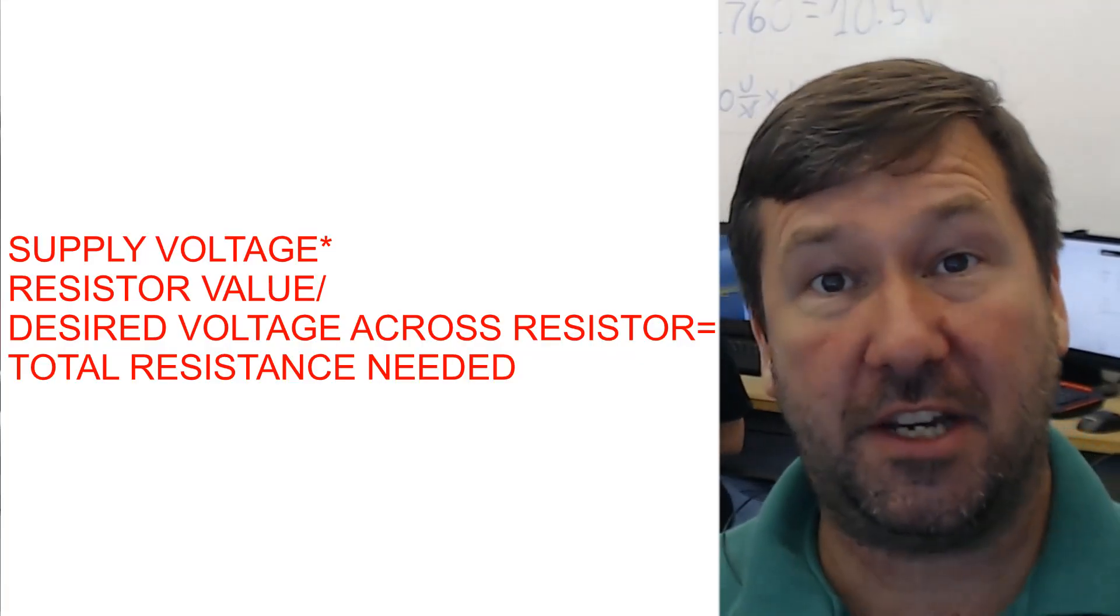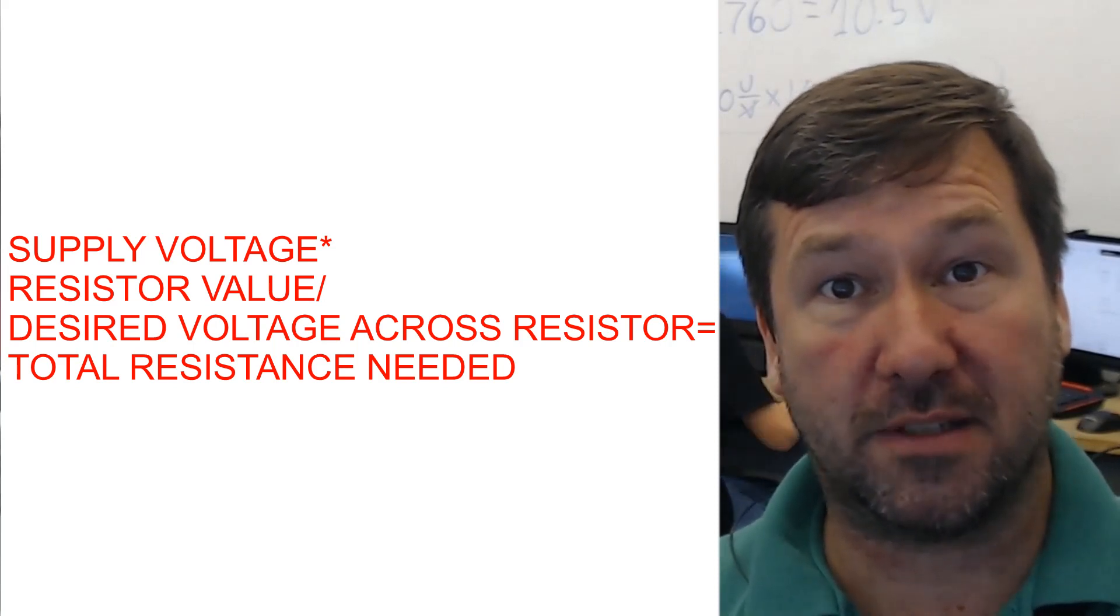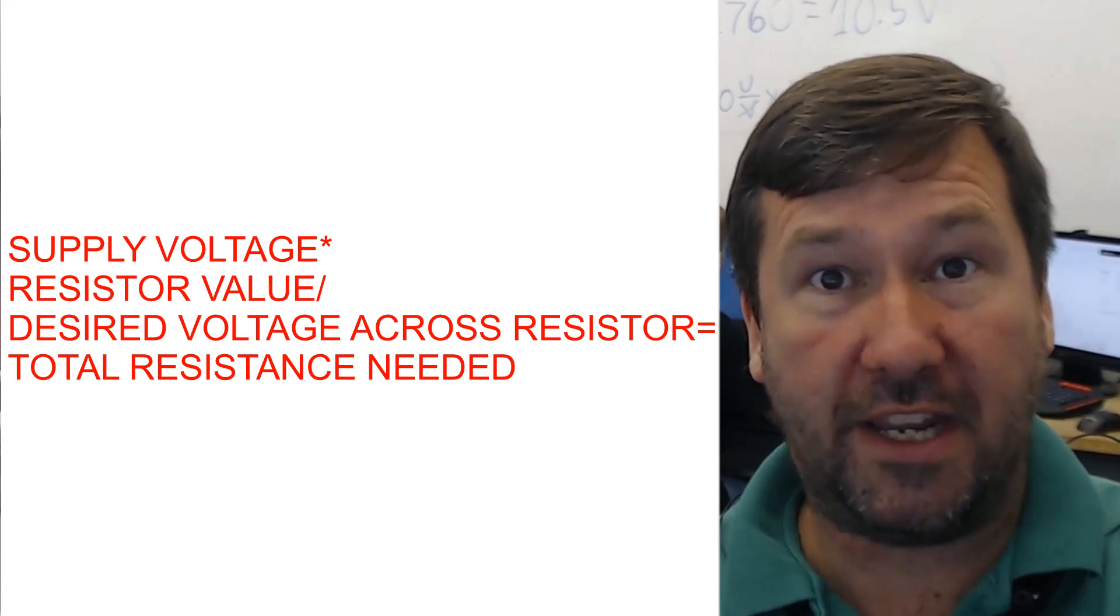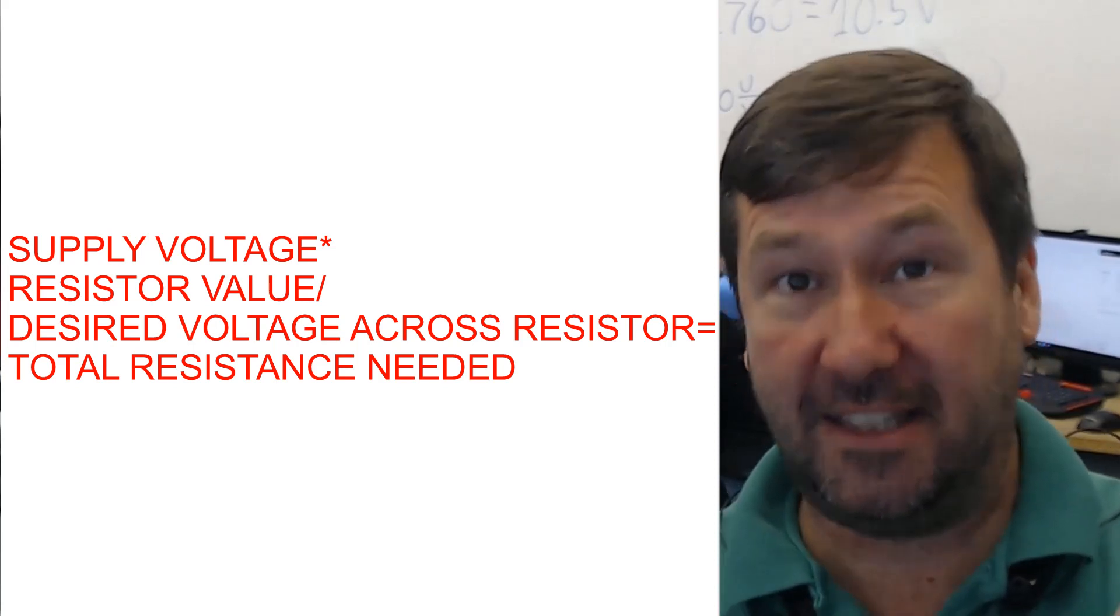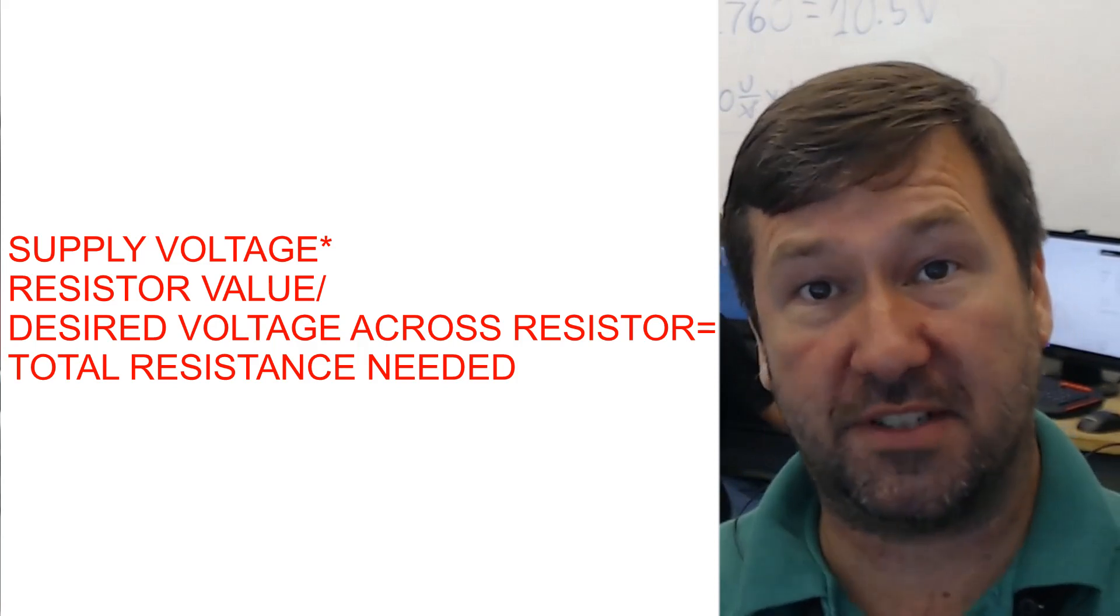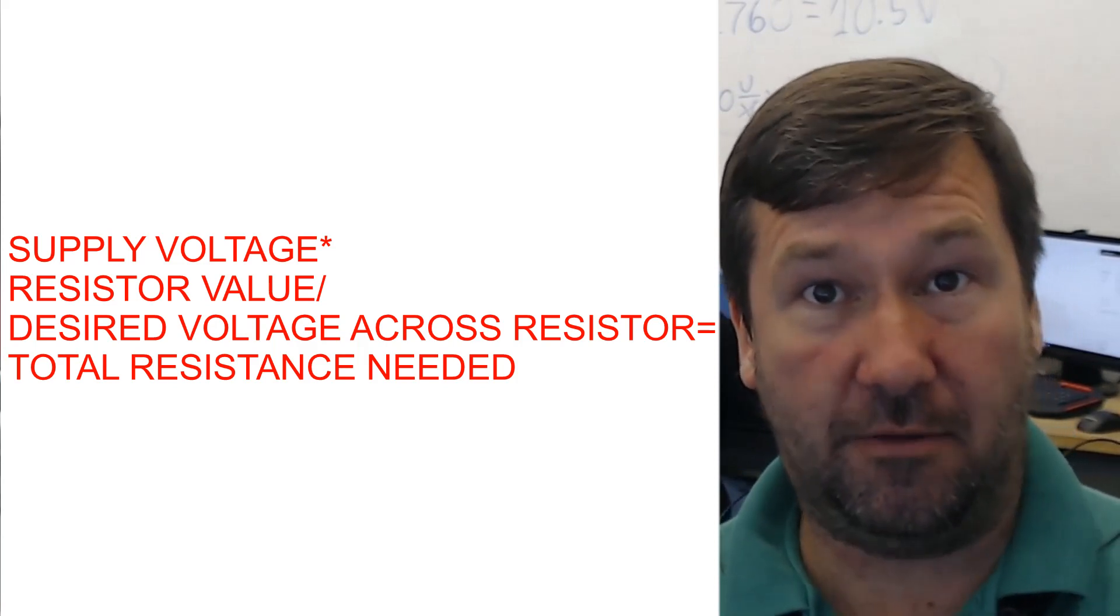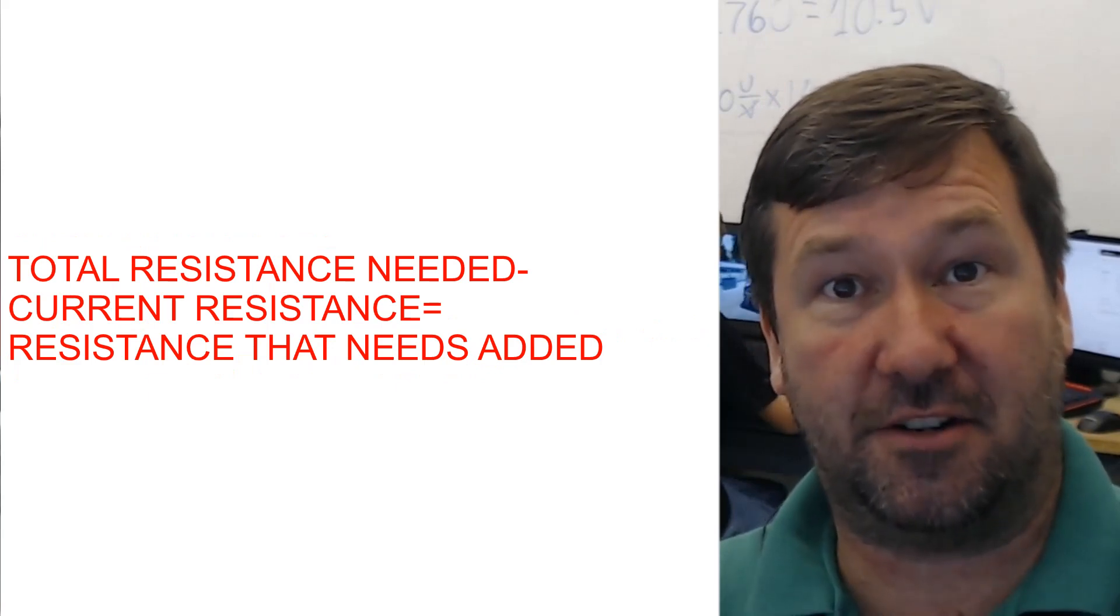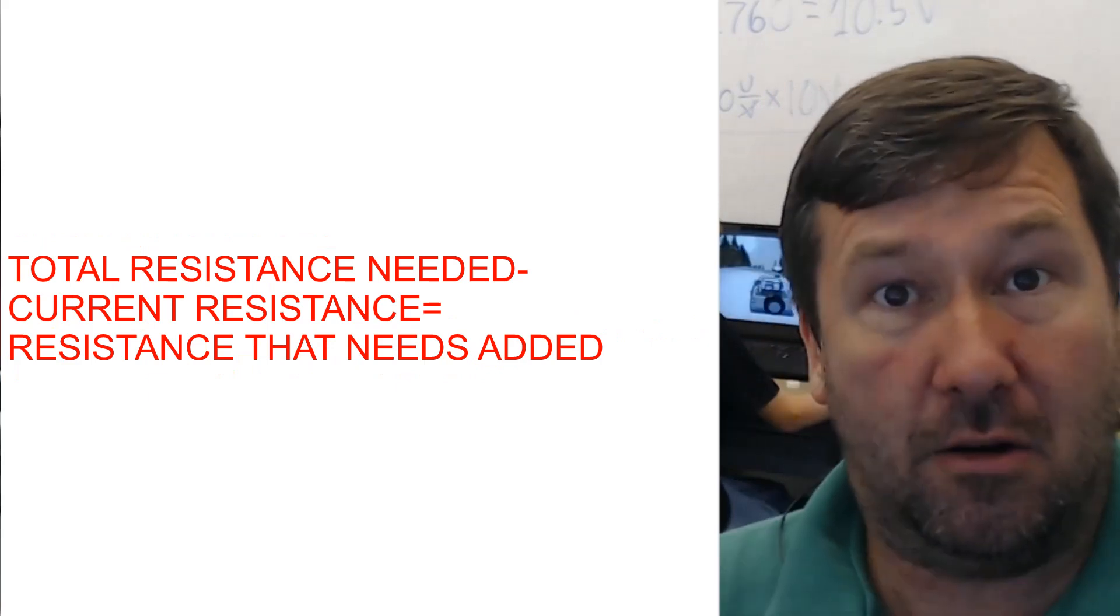The short simple answer is if you take your supply voltage and you multiply it by the resistance of where you're wanting the desired voltage and then divide it by that desired voltage, then you'll get the total resistance needed of that circuit. Then you can subtract the existing resistance of the circuit from that and you know what you need to add.